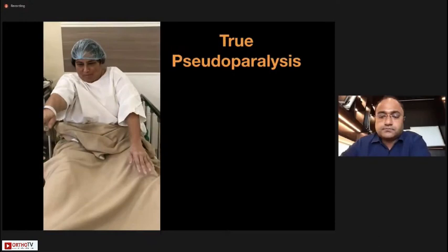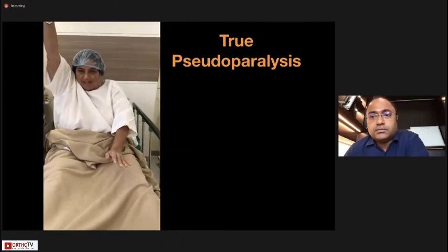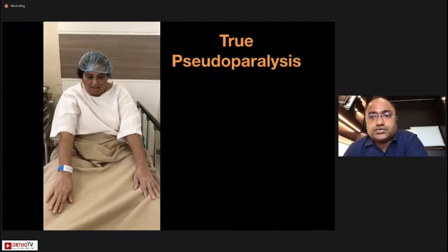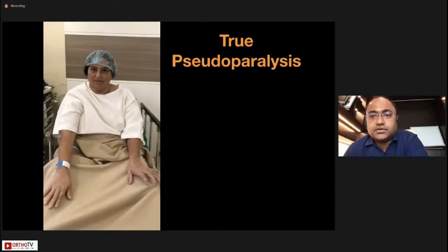This is her clinical presentation — what we call true pseudoparalysis. The patient is not able to initiate any forward flexion whatsoever. Anything less than 90 degrees we label as true pseudoparalysis. This is the severest form of rotator cuff tear and represents the maximum disability you are going to see.